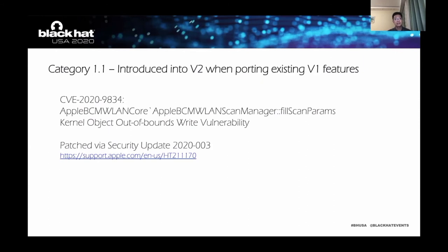Let's start with CVE-2020-9834. It belongs to category 1.1. Generally speaking, when I run a fuzzer for the first time, usually nothing happens. I need to spend a lot of effort to find out what is the reason for not having panics — maybe the target is really robust, or maybe the code coverage rate of my fuzzer is too low. But this time was different. I got a panic report at the same time I ran the fuzzer, and after an hour, there were too many reports to handle.